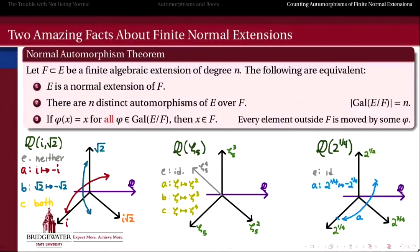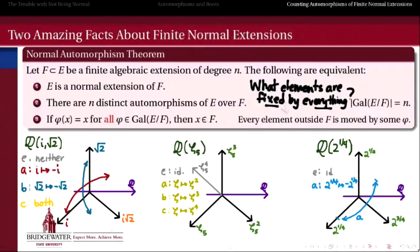In these examples, we want to ask: which elements of the extended field remain fixed by every automorphism in the group of automorphisms of E over F? Which are going to survive if we apply every automorphism to them? Let's consider the first example, Q adjoined with i and √2. Thinking about the transposition of i with minus i: the elements that remain fixed are exactly those that don't have an i or an i√2 in their expansion over Q, but they can have a square root of 2. So Q(√2) describes all elements fixed by automorphism A.